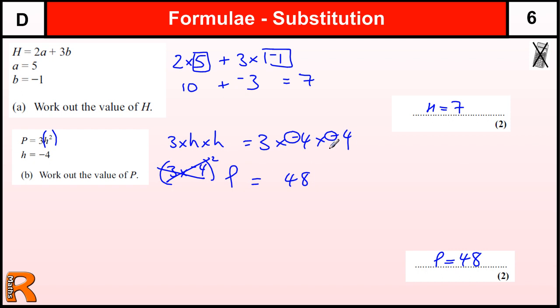Similarly with this one, if you wrote 3 times minus 4 squared, showing that you know you've got a square before you times, or you write 3 times minus 4 times minus 4 like I did, then you will get a method mark. If you mess up by putting minus 48, then you will get one out of two. So four marks there for algebra. Very important that you work on your algebra skills to make them better.